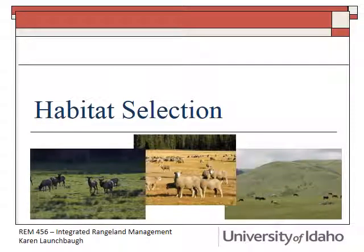Today in Integrated Rangeland Management we're going to focus on habitat selection. We've talked about diet selection and we've also talked about habitat requirements. If you put those two things together you can start to talk about how animals decide where to live, graze, and interact in the environment. So that's what the discussion will be today.